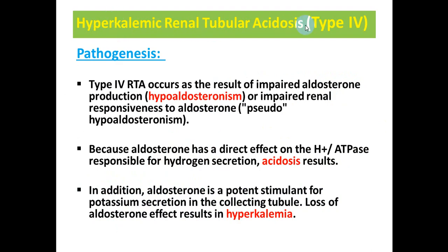Hyperkalemic renal tubular acidosis — type 4 RTA — results from impaired aldosterone production, i.e., hypoaldosteronism, or impaired renal responsiveness to aldosterone, called pseudo-hypoaldosteronism. Because aldosterone has a direct effect on the hydrogen ion ATPase responsible for hydrogen secretion, there will be acidosis in the presence of hypoaldosteronism. Aldosterone is also a potent stimulant for potassium secretion in the collecting tubules, so loss of aldosterone effect will result in hyperkalemia.